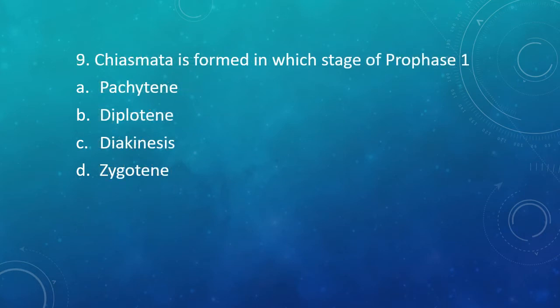Question 9: Chiasmata is formed in which stage of prophase I? Option A: Pachytene. Option B: Diplotene. Option C: Diakinesis. Option D: Zygotene. Meiosis is divided into meiosis I and meiosis II, with stages labeled accordingly. Prophase I itself is divided into 5 sub-stages: Leptotene, Zygotene, Pachytene, Diplotene, and Diakinesis. The correct answer is Option B — Diplotene — as chiasmata formation occurs in the diplotene stage.